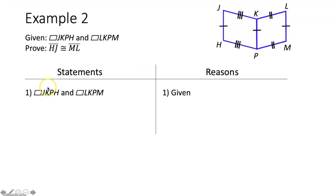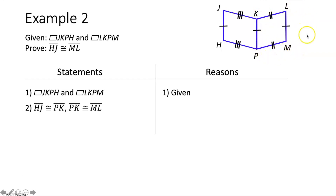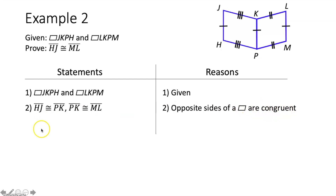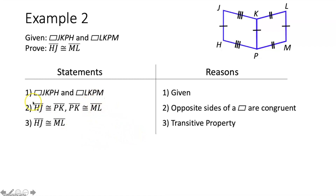So we write the proof: first, the parallelograms are given. Next, segment HJ is congruent to segment PK and segment PK is congruent to segment ML, because opposite sides of a parallelogram are congruent. Finally, segment HJ must be congruent to segment ML by the transitive property of congruence — if A ≅ B and B ≅ C, then A ≅ C.